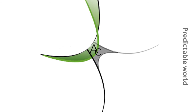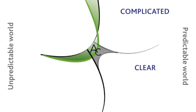Cynefin has five domains. On the right, we have the predictable world, divided into clear or complicated, and on the left, in the unpredictable world, we have chaos and complex. Making sense of what domain you're in, or your issue is in, is from the point of view of the decision maker, and different people may make sense of the same situation in different ways.